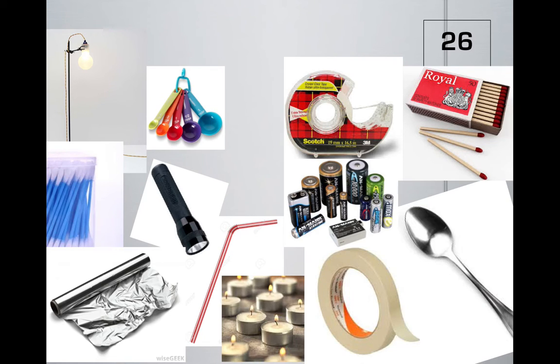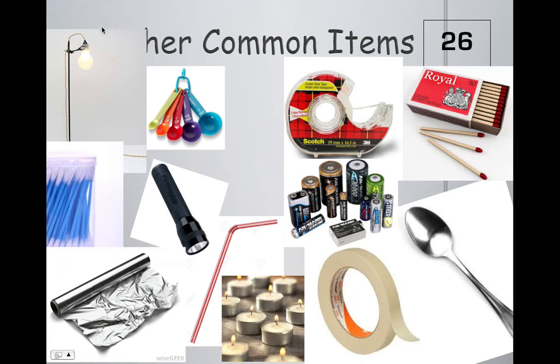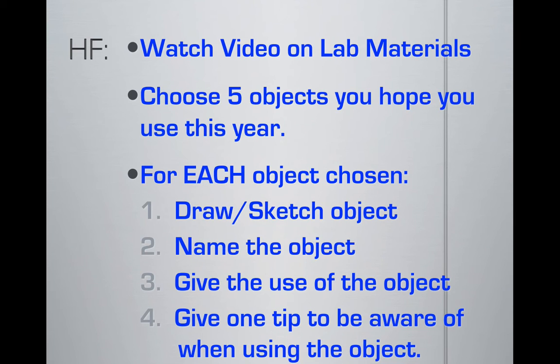There are other common items that we use. There's tons of things - we use lamps in the science lab, measuring teaspoons, flashlights, aluminum foil, Q-tips or cotton swabs, straws, tea lights, tape, batteries, scotch tape, spoons, and matches. There are many other things we use that I haven't placed here, but these are the most common items we use in the science lab in sixth grade as well as throughout your secondary education.